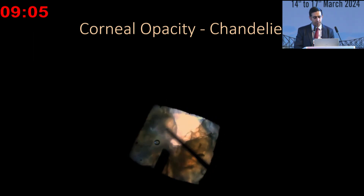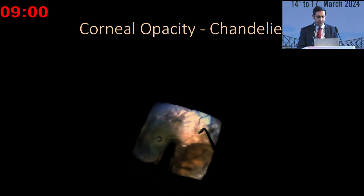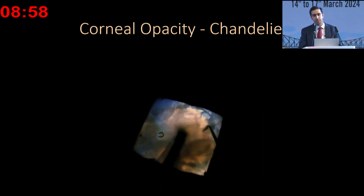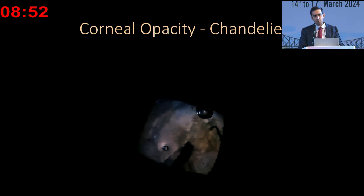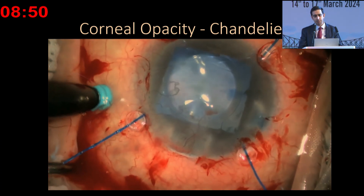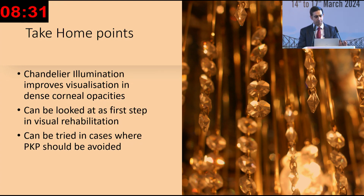It's especially useful in cases where you have herpetic scarring, where your chance of success with a keratoplasty may not be very good. For visual rehabilitation, this would work as a kind of first step before assessing what kind of vision the patient has. The take-home is that chandelier illumination provides improved visualization in dense corneal opacities, and can be a first step in visual rehabilitation, especially where you would avoid a penetrating keratoplasty — such as herpetic scarring, or where there's a high chance of failure or rejection.